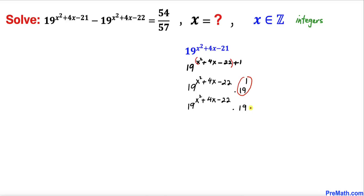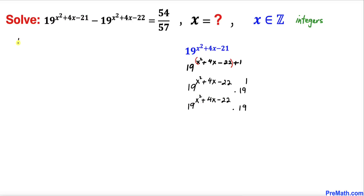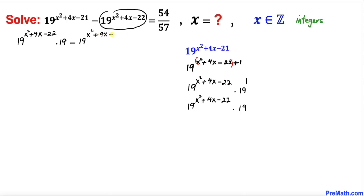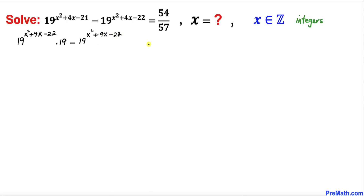19 to the power of 1 is the same as 19. Now I am going to replace the whole first term with this simplified form. So I can write the equation as 19 to the power of (x squared plus 4x minus 22) times 19, minus 19 to the power of (x squared plus 4x minus 22), equals the right-hand side.